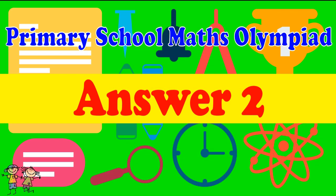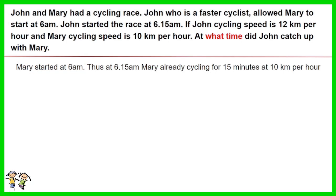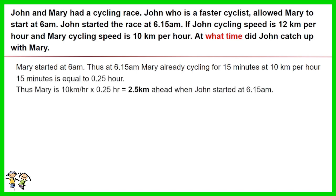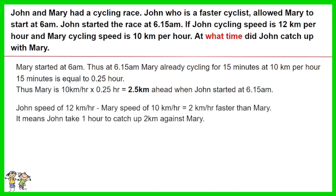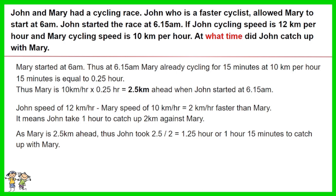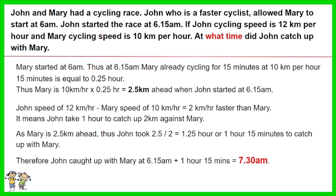Answer for question 2. Since Mary started at 6 a.m., at 6:15 a.m. Mary was already cycling for 15 minutes at 10 km per hour. 15 minutes equals 0.25 hour, so Mary was 2.5 km ahead when John started at 6:15 a.m. John's speed of 12 km per hour is 2 km per hour faster than Mary's, meaning John takes 1 hour to close a 2 km gap. As Mary is 2.5 km ahead, John took 2.5 divided by 2, which is 1.25 hours or 1 hour 15 minutes to catch up. Therefore John caught up with Mary at 6:15 a.m. plus 1 hour 15 minutes, which is 7:30 a.m.